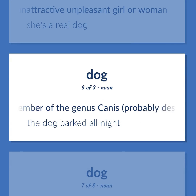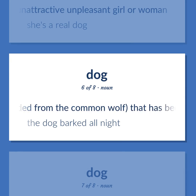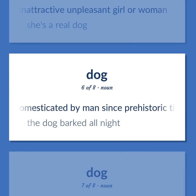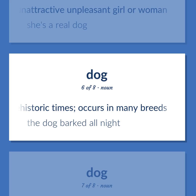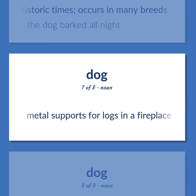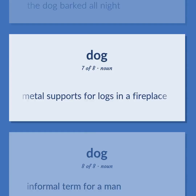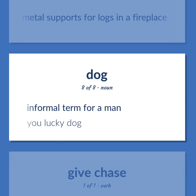Dog: A member of the genus Canis, probably descended from the common wolf, that has been domesticated by man since prehistoric times and occurs in many breeds — the dog barked all night. A metal support for logs in a fireplace. Informal term for a man — you lucky dog.